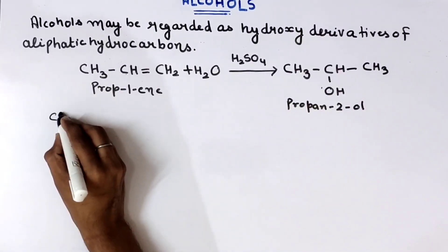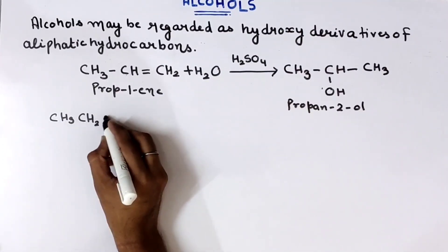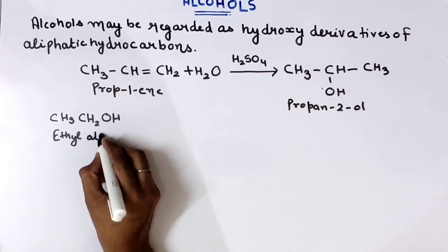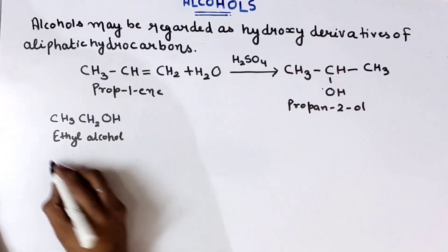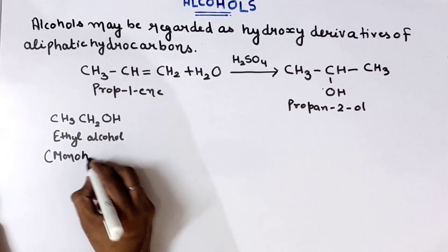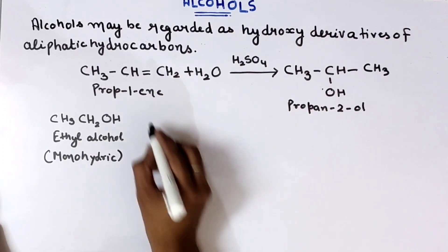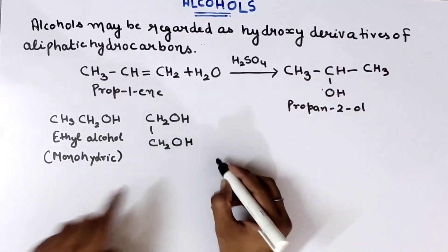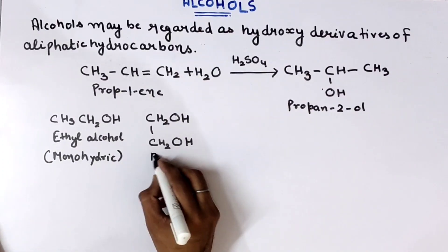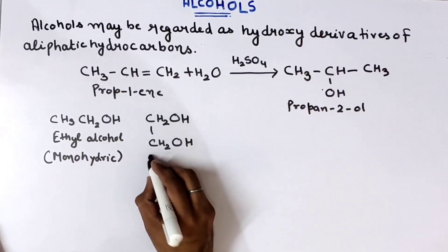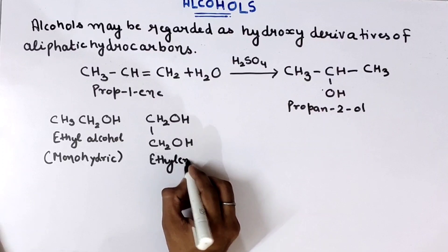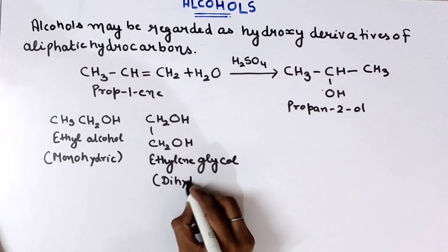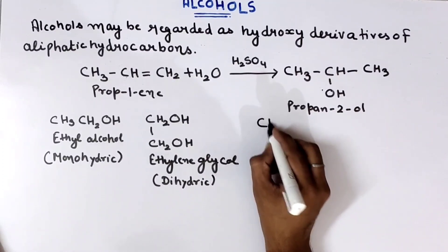For example: CH₃CH₂OH — this is ethyl alcohol. This molecule has one OH group, so it is monohydric. If we write CH₂OH–CH₂OH, this molecule has two OH groups — this is ethylene glycol, which is dihydric. Further, CH₂OH–CHOH–CH₂OH has three OH groups — this is glycerol, which is trihydric.